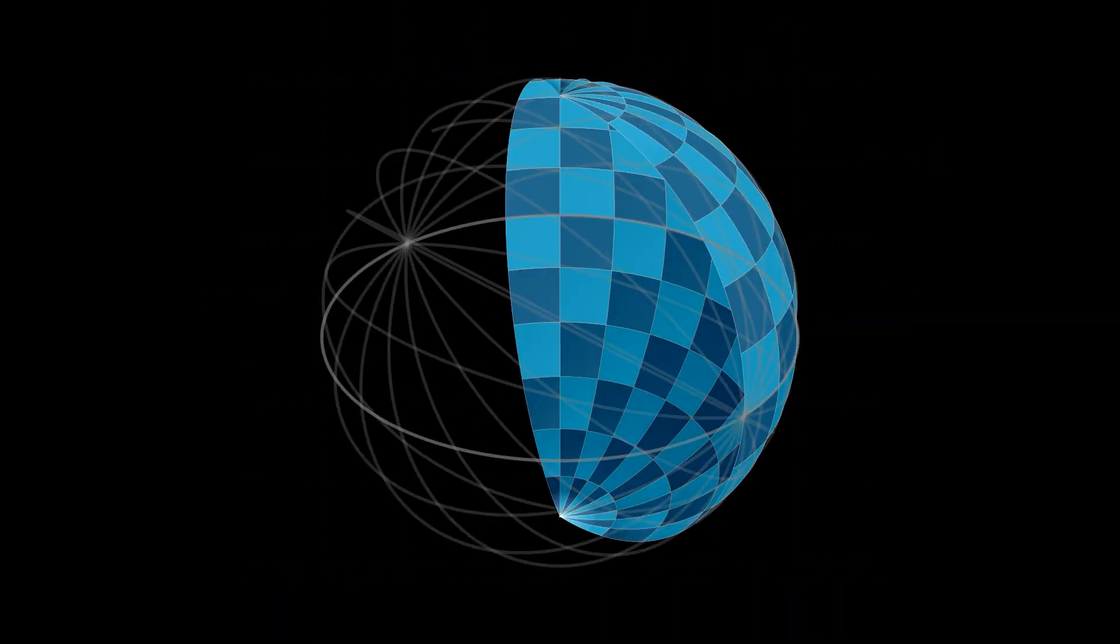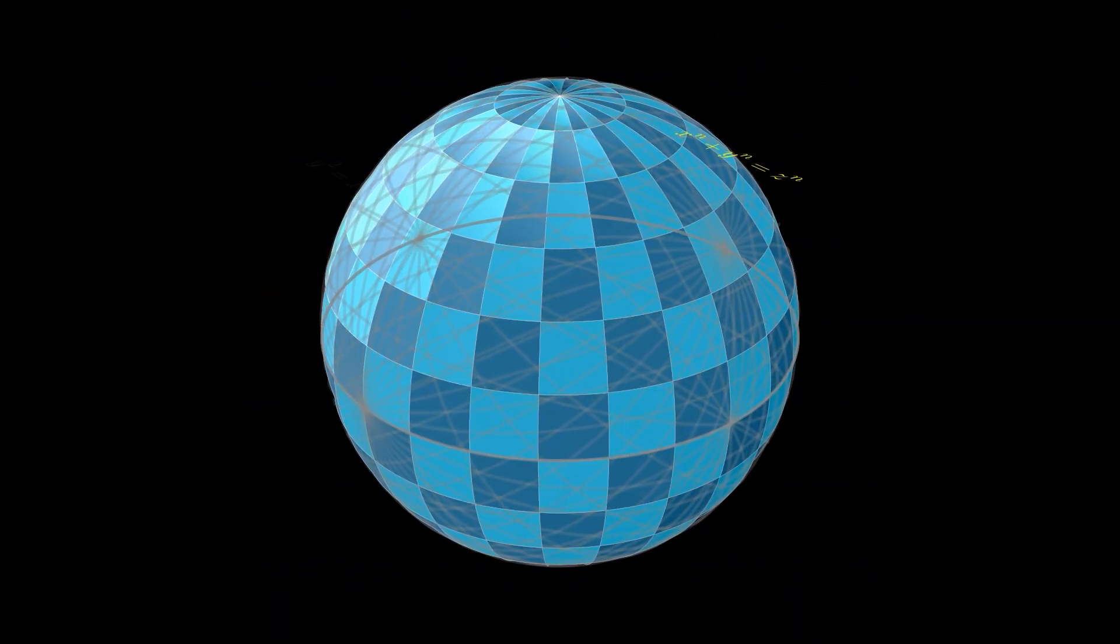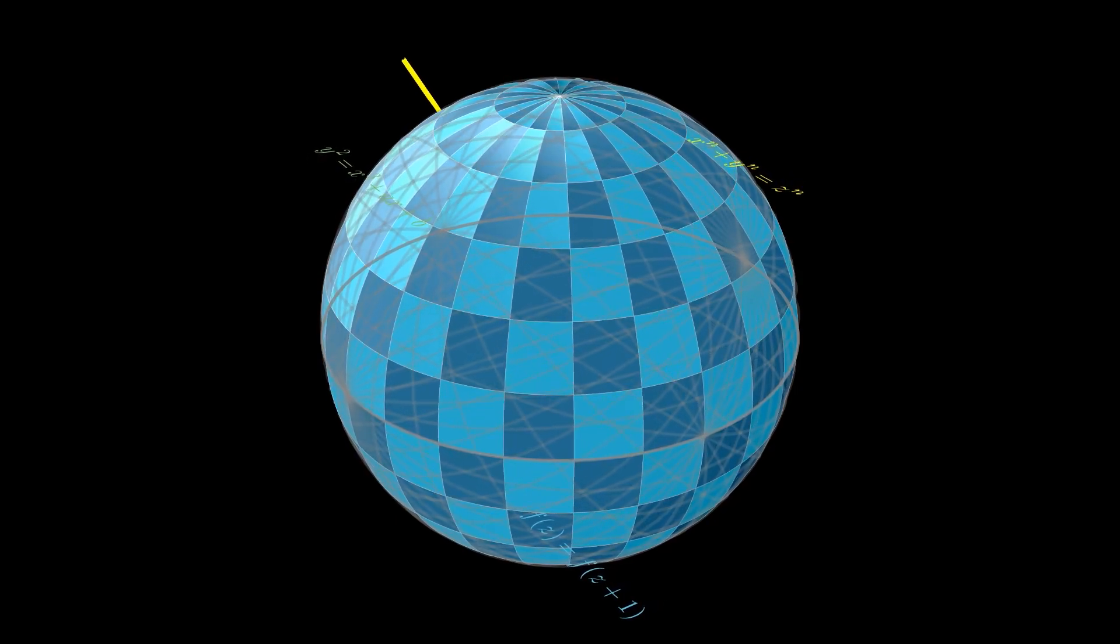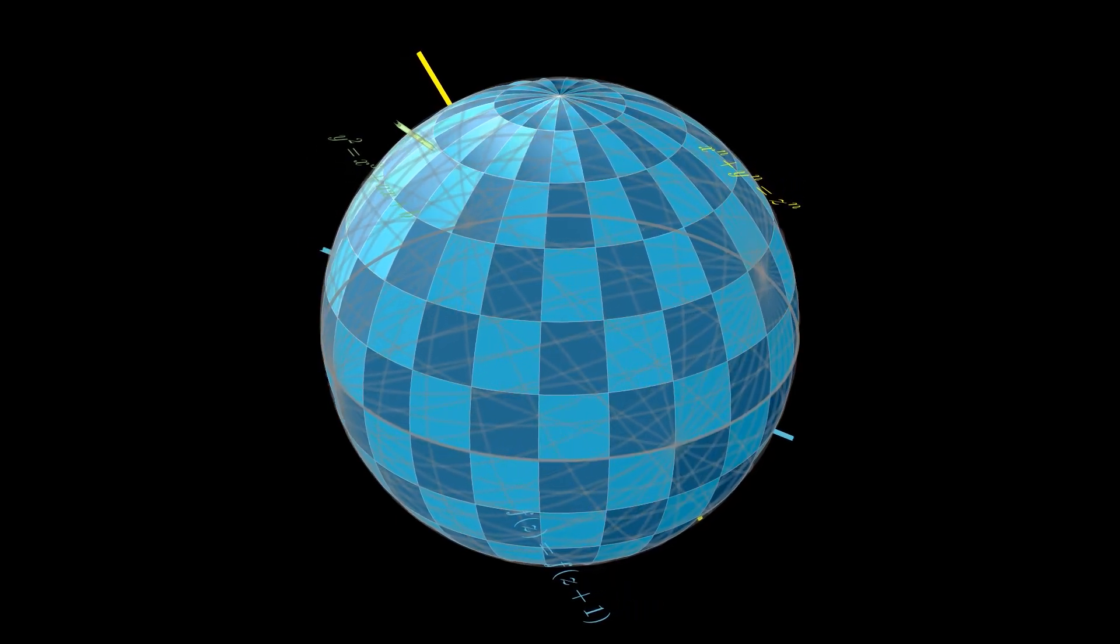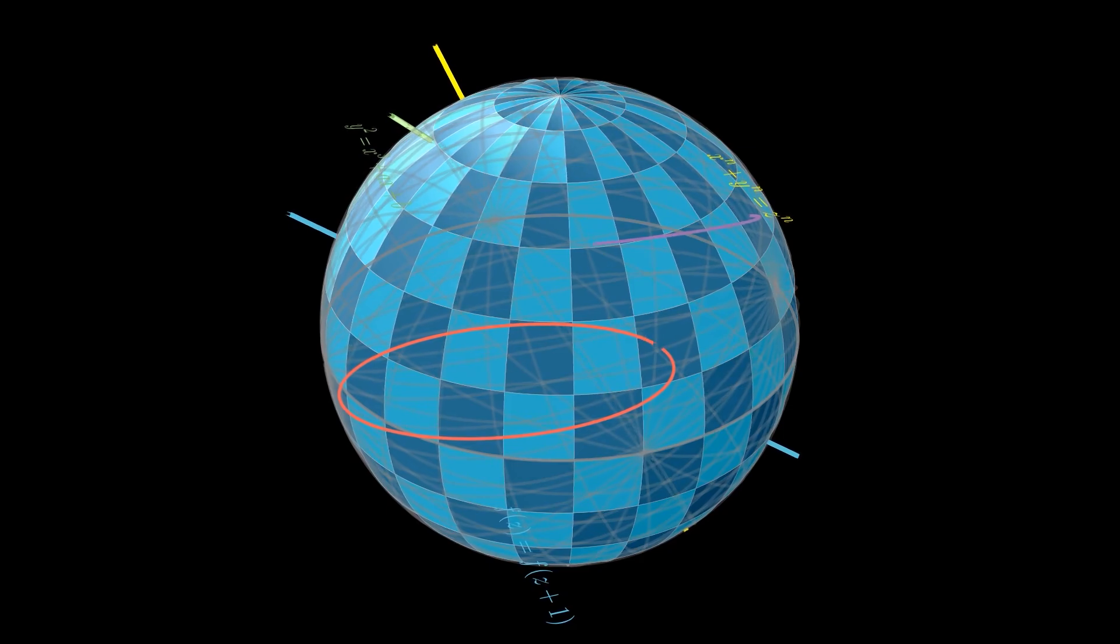The proof of Fermat's last theorem didn't just resolve a historical puzzle, it advanced fields like cryptography, which rely on elliptic curves and modular arithmetic to secure modern communication.